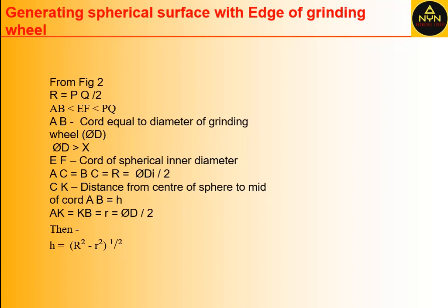Here we have to remember: to generate a spherical shape, the grinding wheel diameter must be bigger than the workpiece width. From Figure 2 we can see AC equals BC equals capital R, which equals DI divided by 2. CK is the distance from the center of the sphere to the midpoint of chord AB, represented by H.